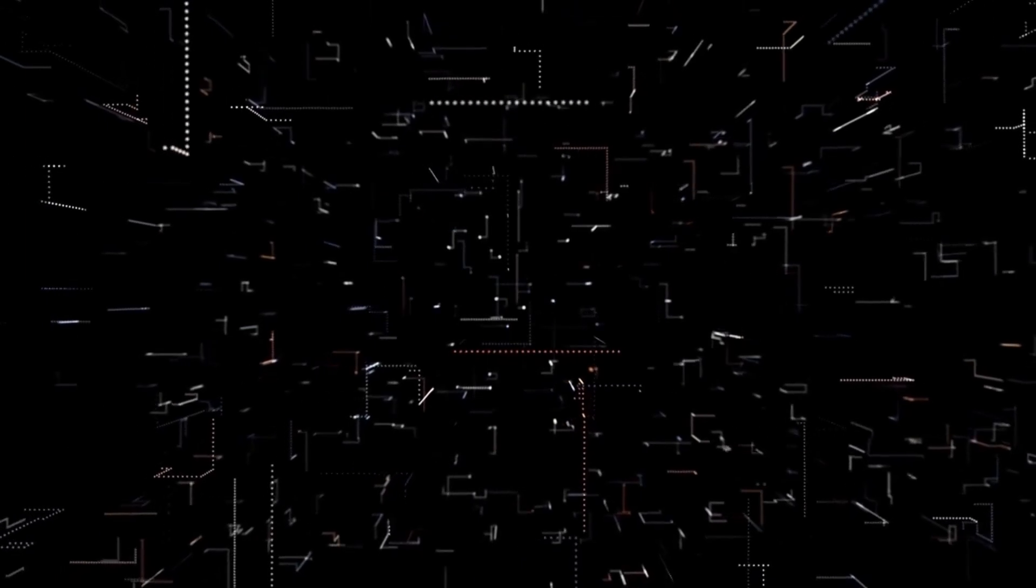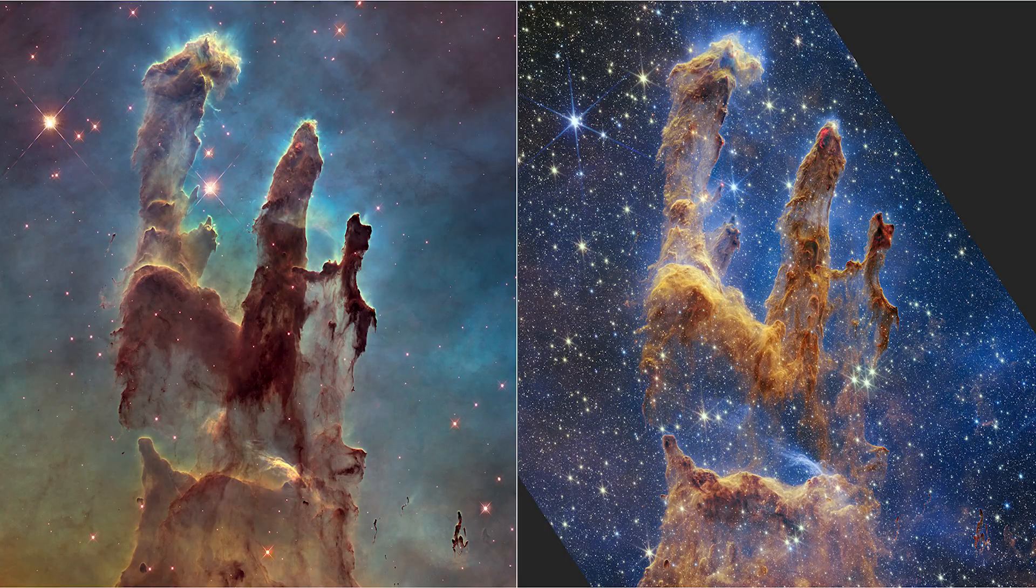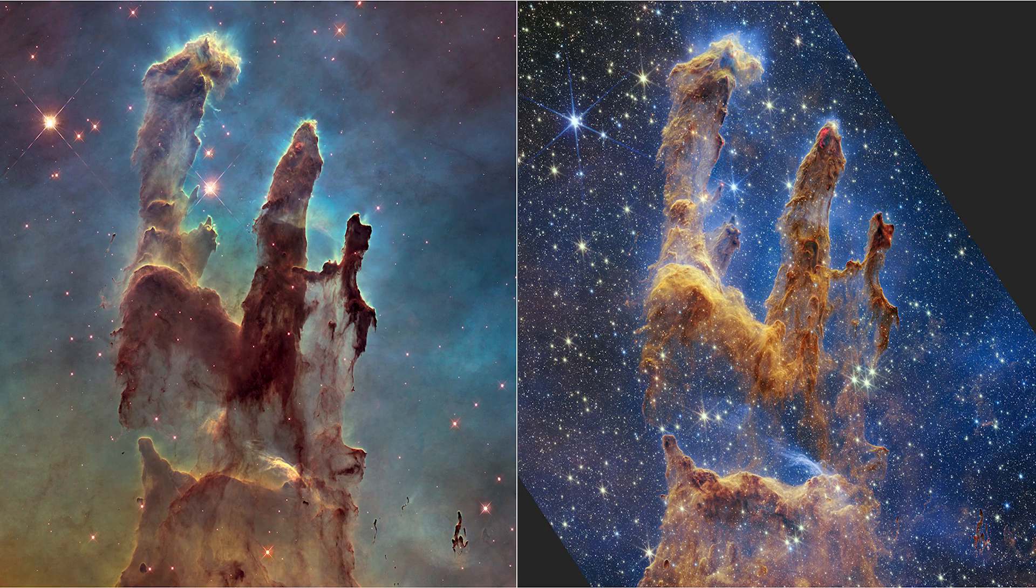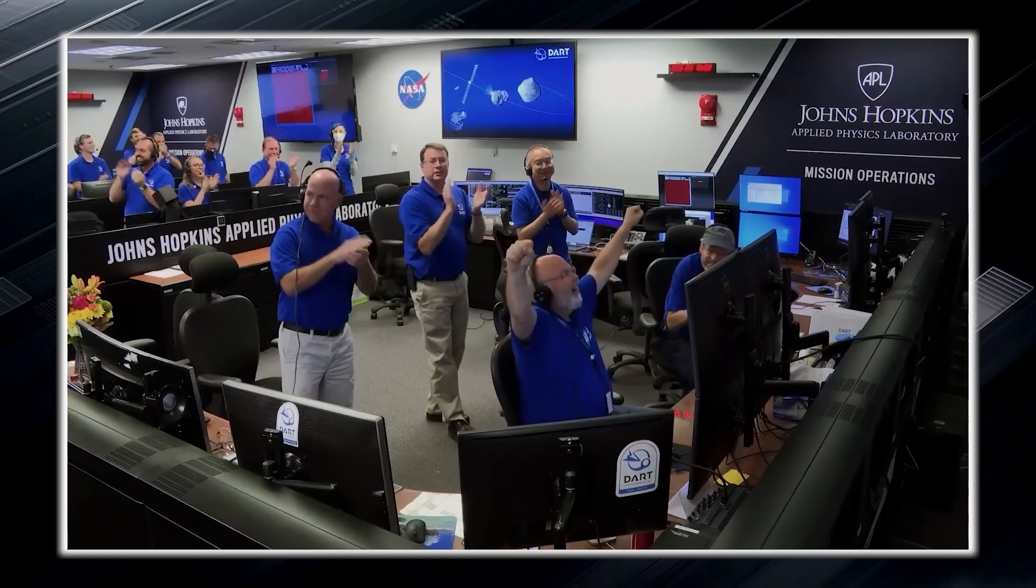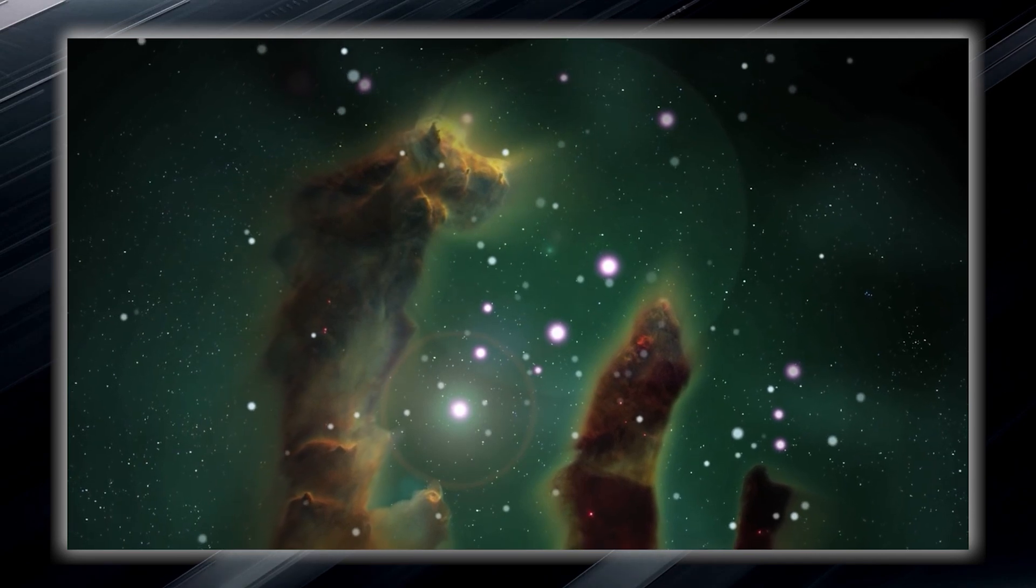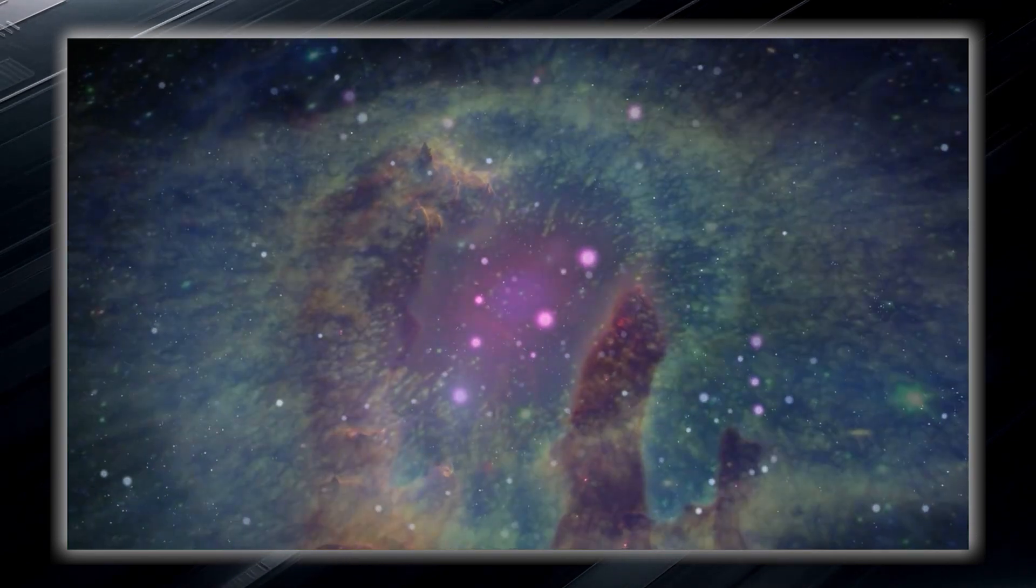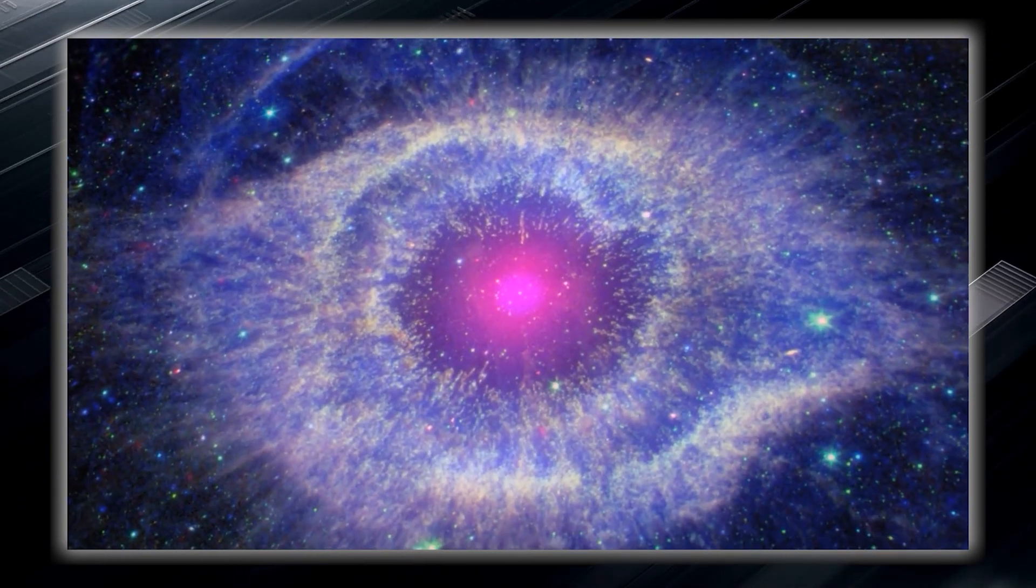The new photograph captured by the James Webb Space Telescope reveals the Pillars of Creation in even greater detail. Several stars are visible that were not visible in the previous image captured by Hubble, some of which formed only a few hundred thousand years ago. This represents a remarkable scientific breakthrough, but on reflection, it is not possible to say with certainty whether they are direct constructions of extraterrestrials.